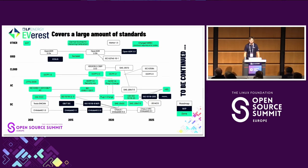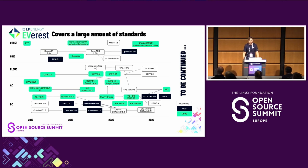Here you can see a very chaotic slide of which protocols and standards are out there in the field. You can see on the left the categorization into grid, cloud, AC and DC, and also a timeline of when these standards came up. In green are the standards we already support, like OCPP and ISO 15118. The black ones are the ones we are currently working on — for example, EEBus, which I personally work on. And in white are the remaining standards we have on our roadmap, since we want to support hopefully all protocols and standards in the future.